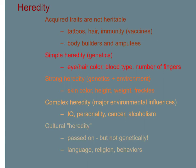Acquired traits that are not heritable would be things like tattoos — if you get a tattoo, you are not going to pass that onto your children. The way you fix your hair or cut it, immunity or vaccines that you acquire — those are not heritable traits. You will not pass those onto your offspring. Bodybuilders, amputees: if someone has an amputation or builds up lots of muscles through training, they are not going to be passing that onto their offspring.